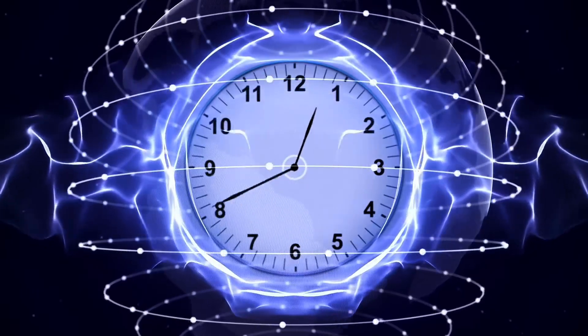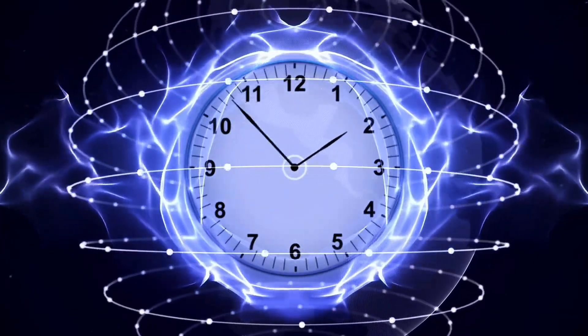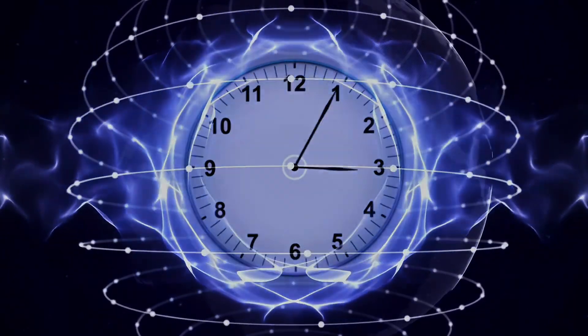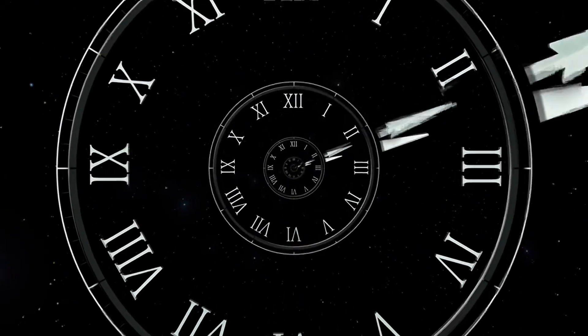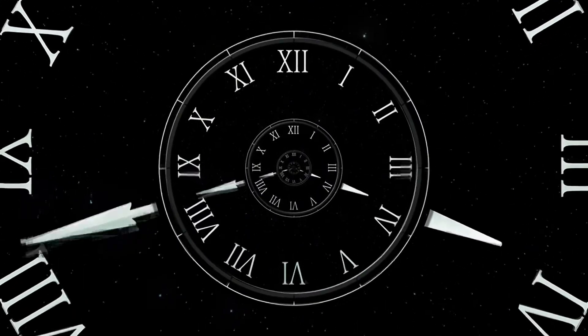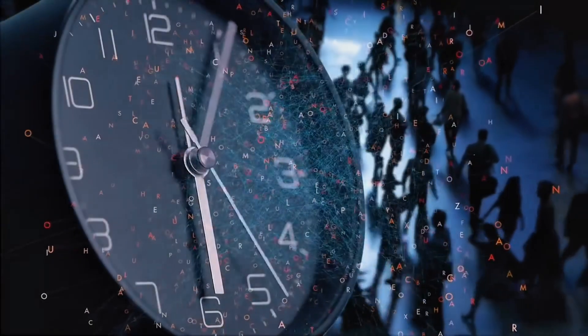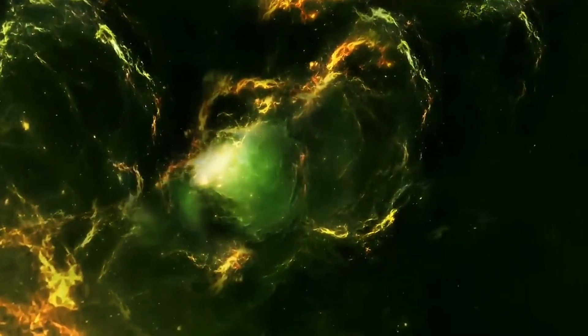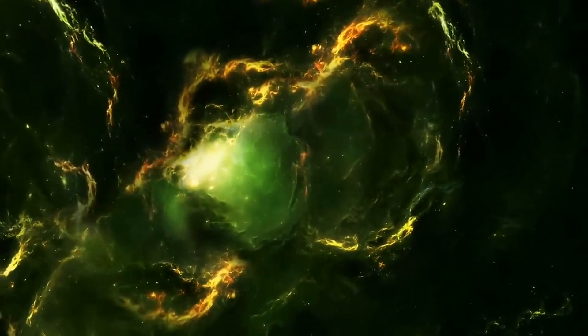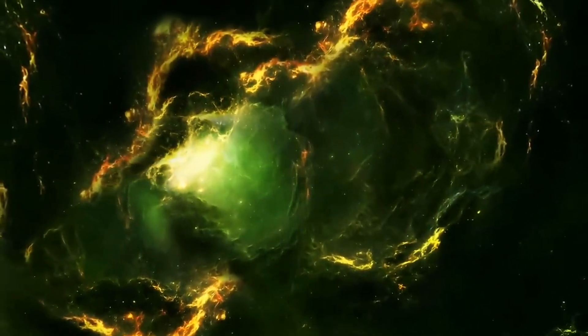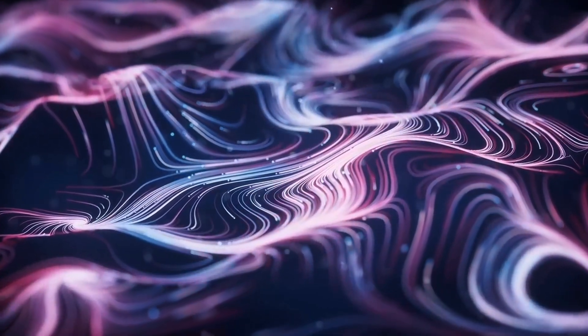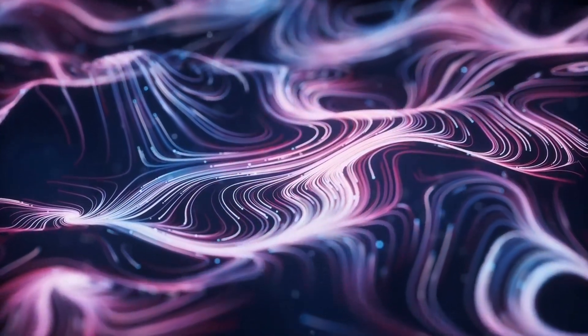Because time, as we experience it, doesn't move in circles. It moves forward. Always forward. That's what physicists call the arrow of time. It's the idea that time has a direction. Not because clocks tick or planets orbit. But because the universe insists on going from order to disorder. From simplicity to complexity. From clean labs to chaotic timelines.